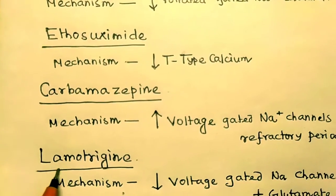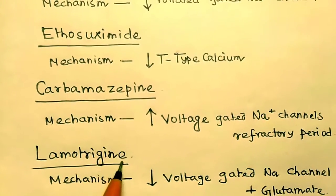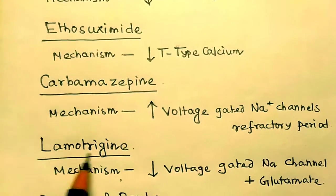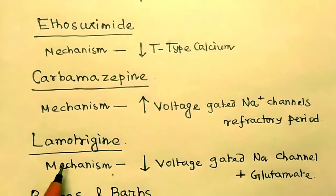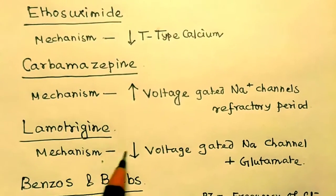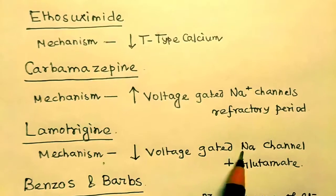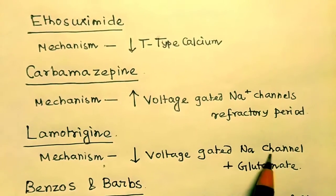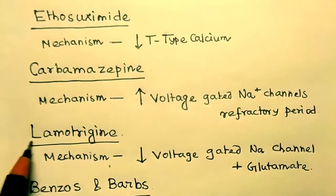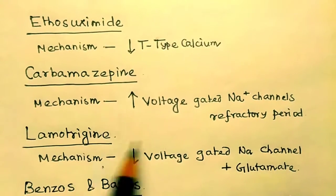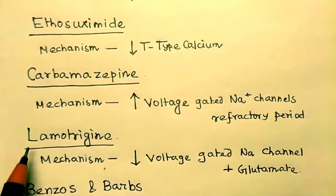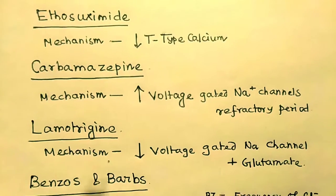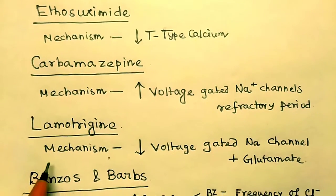The next one is lamotrigine. Lamotrigine also has the same mechanism — voltage-gated sodium channel decrease. Lamotrigine additionally affects glutamate as part of its mechanism.